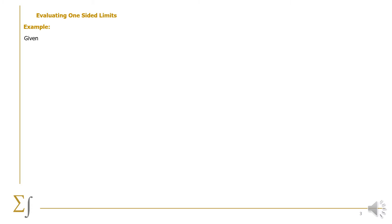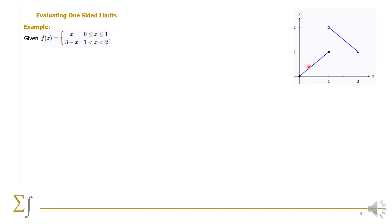We want to evaluate one-sided limits. We take an example: given f(x) equals x whenever x is in the closed interval 0 to 1, and equals 3 minus x whenever x is in the open interval 1 to 2. We have the graph for this function. From 0 to 1, we put closed circles and draw the straight line f(x) = x. From 1 to 2, we have a straight line with slope minus 1, which is 3 minus x, with open circles for the open interval.